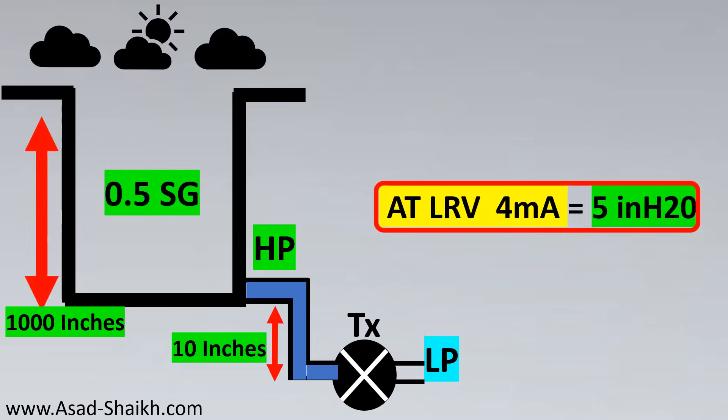You'll notice that even with no liquid in the tank, the transmitter shows 5 inches of H2O. If you had calibrated the transmitter so that 0 inches of H2O gives 4 mA, that would be an incorrect reading. When the transmitter is moved below the tapping, you must compensate for the liquid head acting on the transmitter.